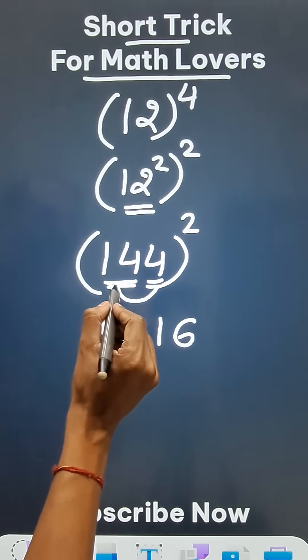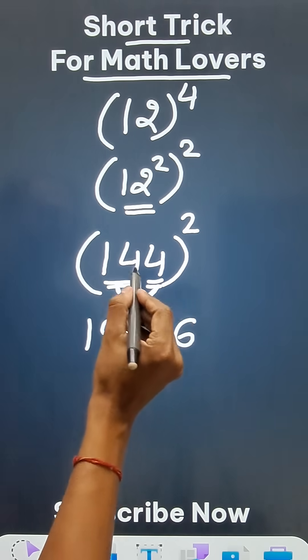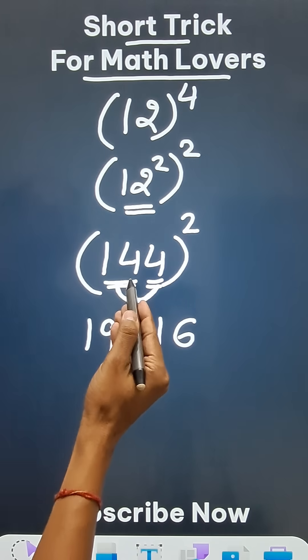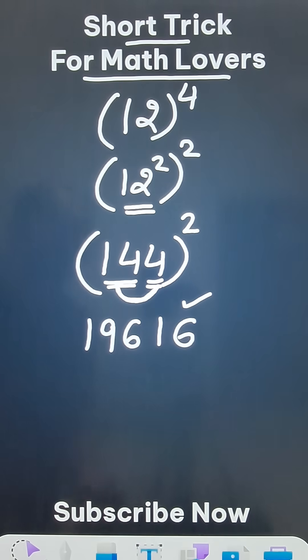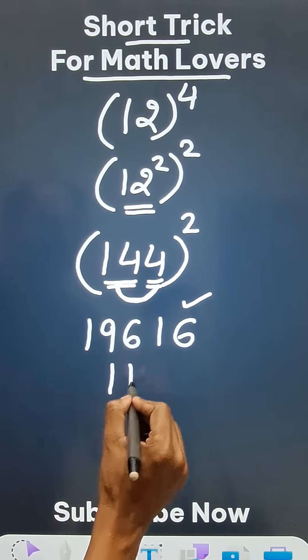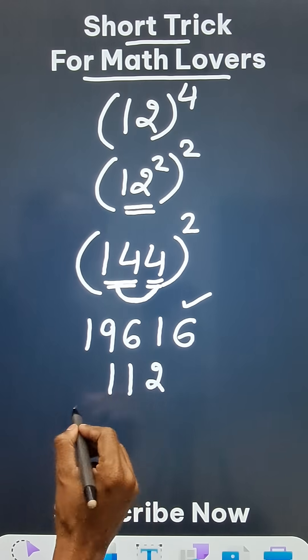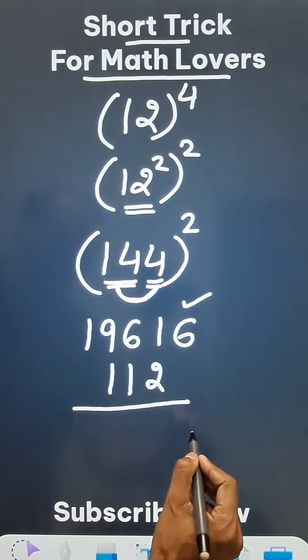We have to do one more step. 14 times 4 is 56, and double of 56 is 112. So I'll leave one digit from the right hand side and write 112 here, and then just add vertically. You will see the magic.